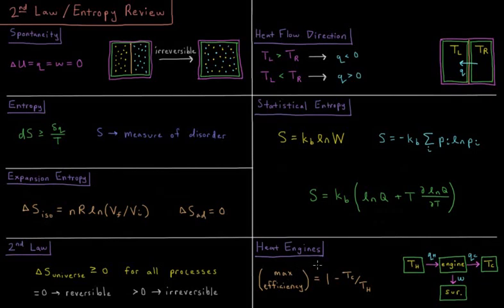And lastly, as an example, we look at heat engines where we have a hot reservoir pumping heat to an engine, which pumps out work to the surroundings and heat to a cold reservoir, showing that the maximum efficiency of this engine from converting heat into work is one minus the ratio of the cold bath to the hot bath in our system.